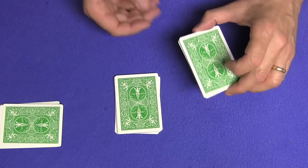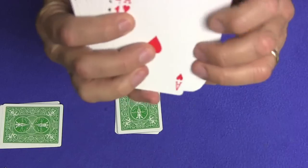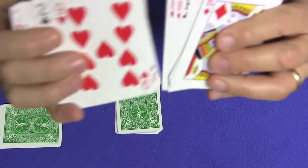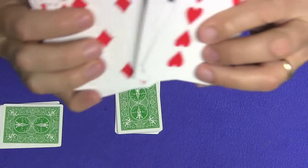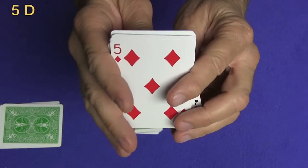From this pile I want you to select any card. You're going to look at the cards as I go by them and whenever you see one that you like, just call out stop. Stop. Okay, so remember that card. Your card is the five of diamonds.